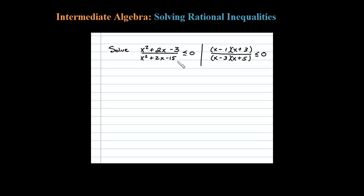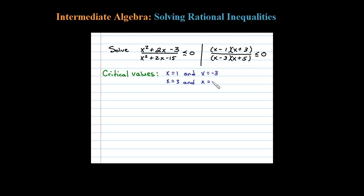This factored form is equivalent to the original inequality. The first step is to determine the critical values. The critical values are the zeros of the numerator and the zeros of the denominator. By inspection, the zeros of the numerator are x equals 1 and x equals negative 3. The zeros of the denominator are x equals 3 and x equals negative 5. The zeros of the denominator are called restrictions, which is important to note.